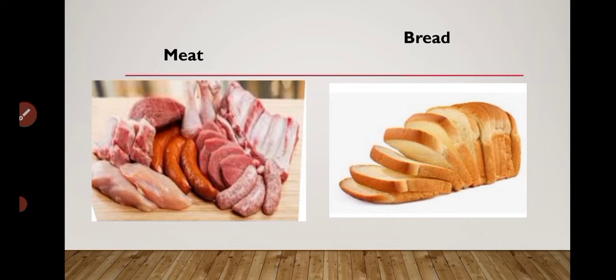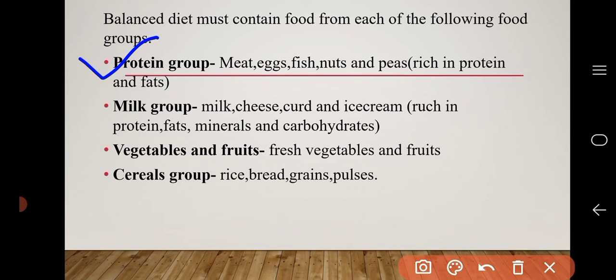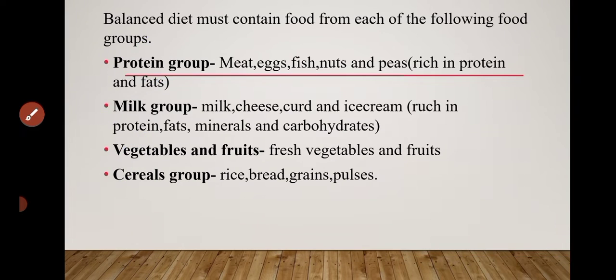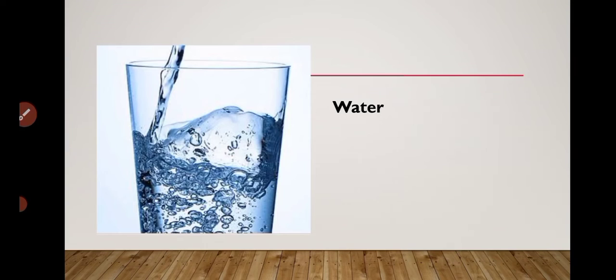A balanced diet must contain food from each of the following groups: protein group, milk group, vegetables and fruits group, and cereal group. The diet should be planned so that the body gets a sufficient amount of each nutrient, as well as sufficient calories, roughage, and water.